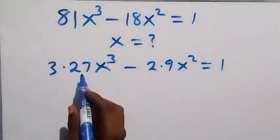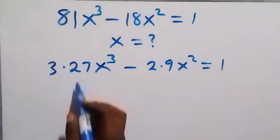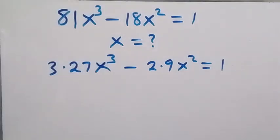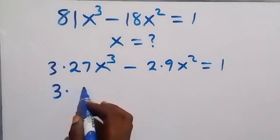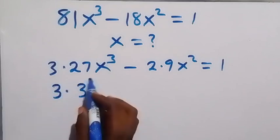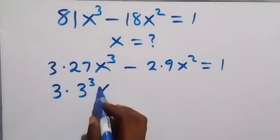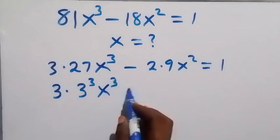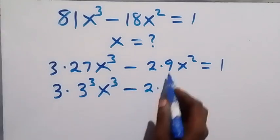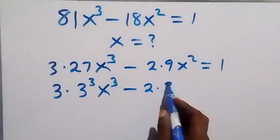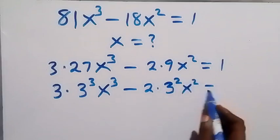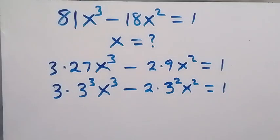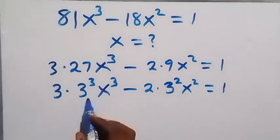We can express 27 as 3 raised to power 3, so this will be written as 3 times 3 raised to power 3, then times x raised to power 3, minus 2 times 3 squared, then times x squared, which equals 1.